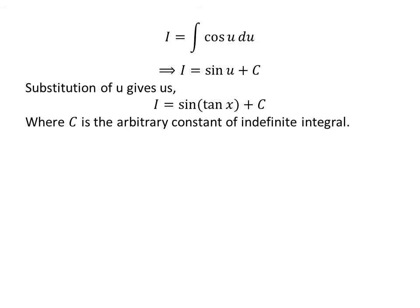Let us substitute u in terms of x. As we had assumed u is equal to tangent of x, the integral of cosine of tangent of x times secant squared of x is equal to sine of tangent of x plus C.